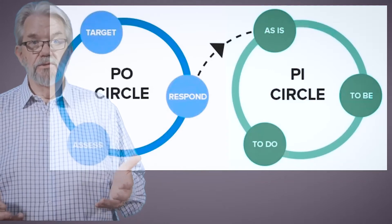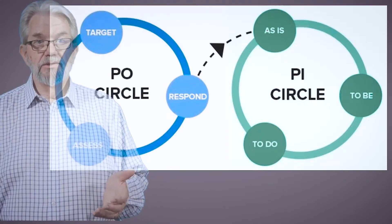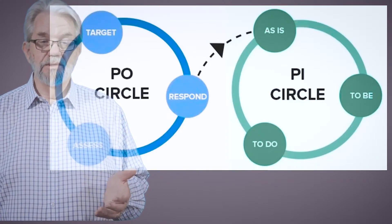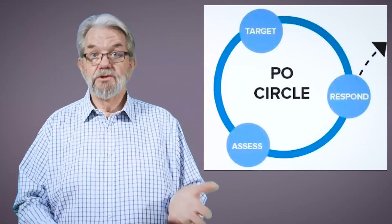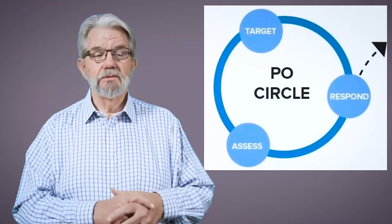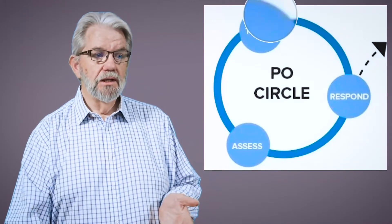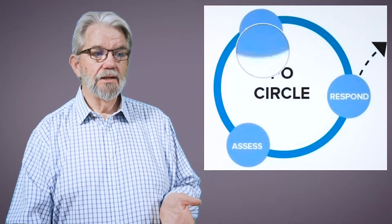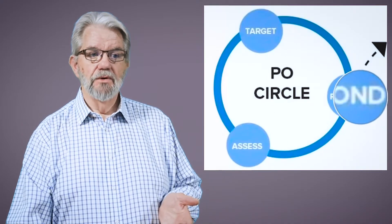It's not the hundreds or the thousands. So they're the two process improvement circles. Let's look at each of them in turn. So here we are at the PO circle, process ownership circle, and you can see that it's got three nodes. It's got the node target, assess, and respond.